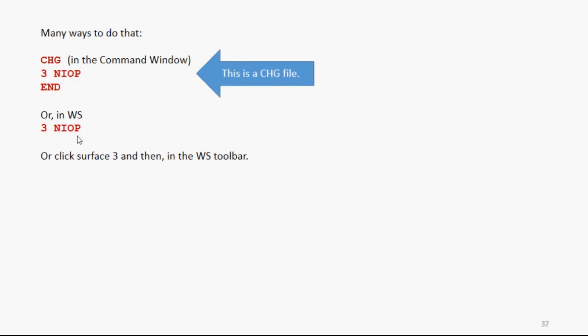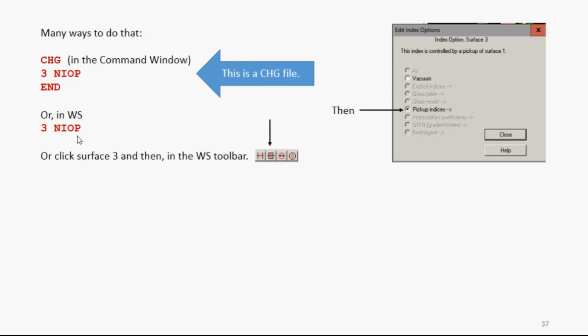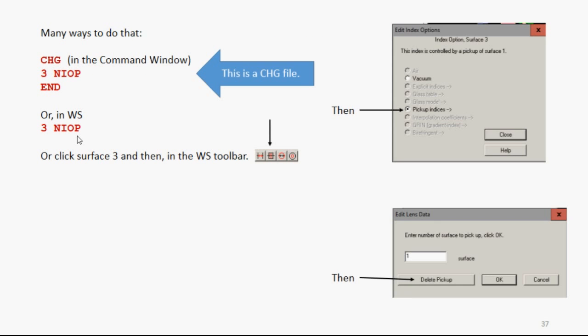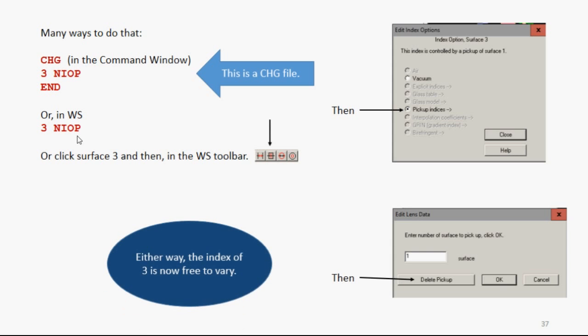Let's remove that. You can do it with a change file. You can type CHG in the command window, and then Surface 3. No index option. That'll take it off. Or in the worksheet, you can type 3 NIOP. That works too. Or you can click Surface 3, and then in the worksheet toolbar, you click a button, and then that goes to another dialog. You click the pickup index, and you click delete pickup. All three ways work. And either way, Surface 3 is now free to vary.